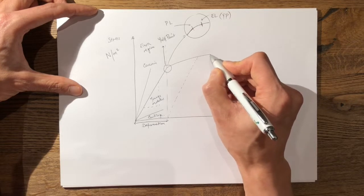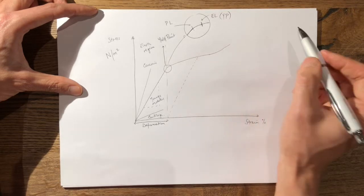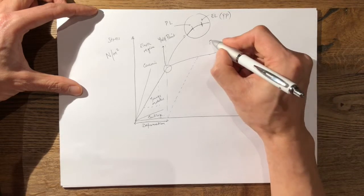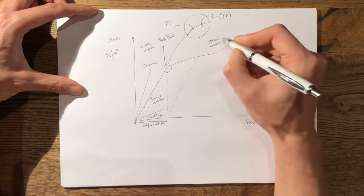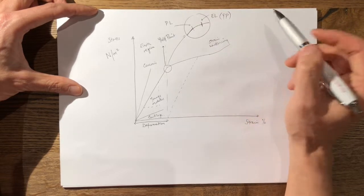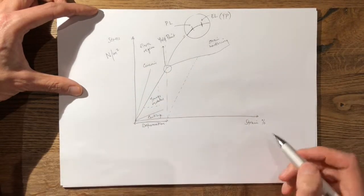Beyond the plastic region the material undergoes something called strain hardening. This is an area of the curve where you have to have a significant increase in stress to increase the strain.